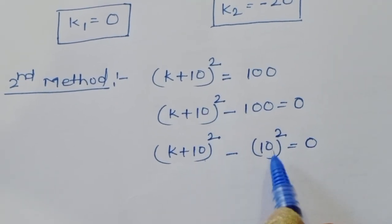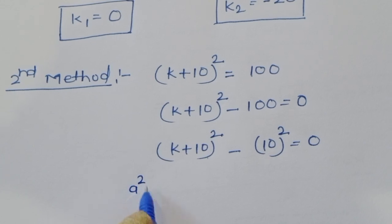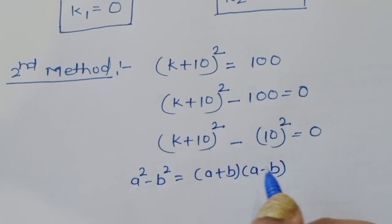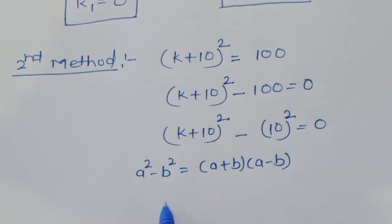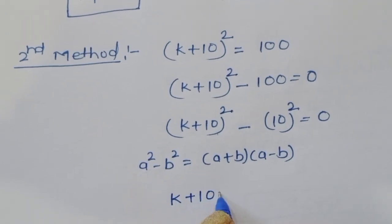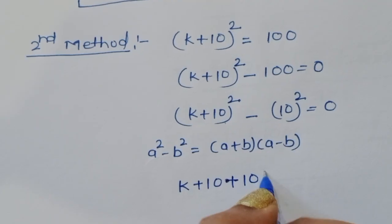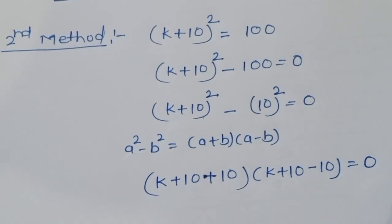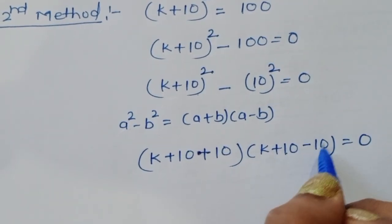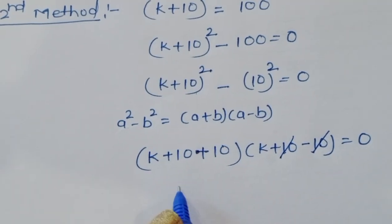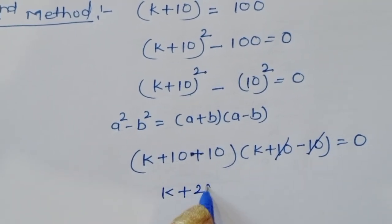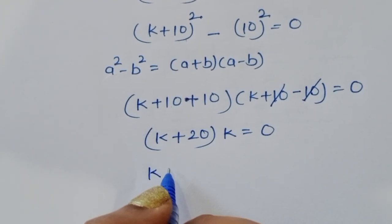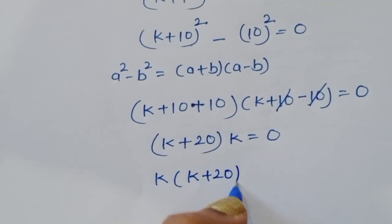This is the form a² - b², and we know the formula a² - b² = (a + b)(a - b). Here a = (k + 10) and b = 10, so we get (k + 10 + 10)(k + 10 - 10) = 0, which simplifies to (k + 20)(k) = 0.